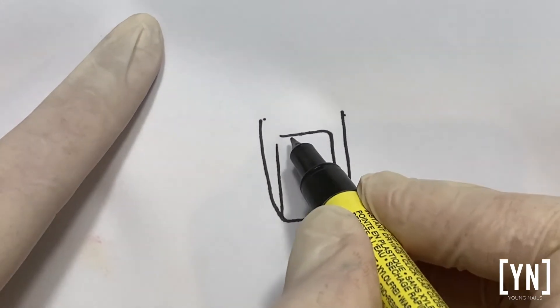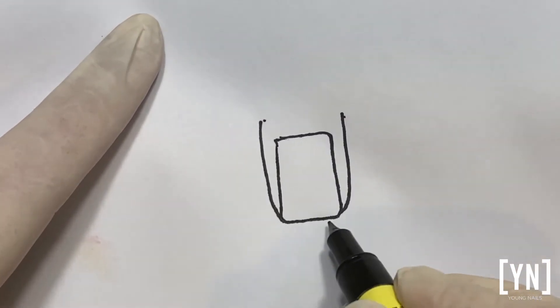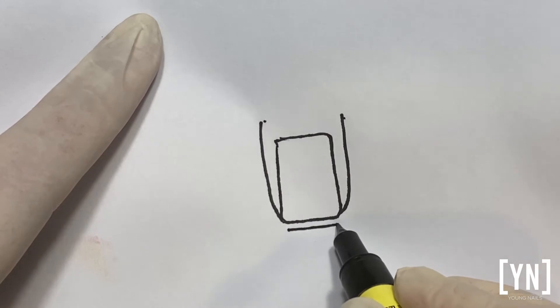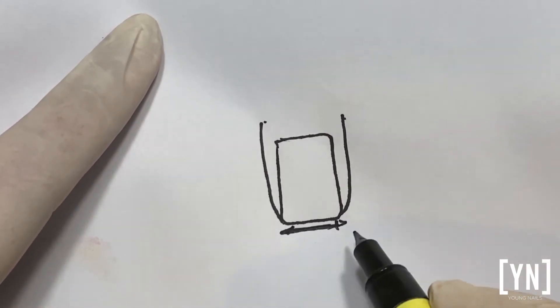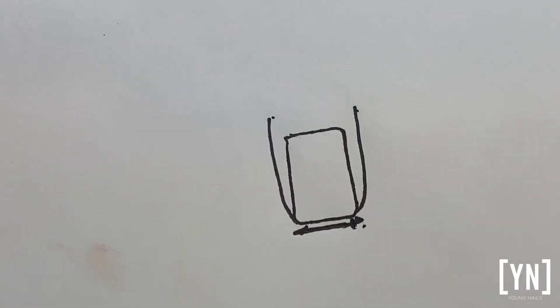In today's Buzz Talk, we are talking about the flesh line. Somebody that's got a very straight flesh line here in the front. Normally the sculpture form doesn't fit on that shape nails, so how will we adjust our sculpture form?